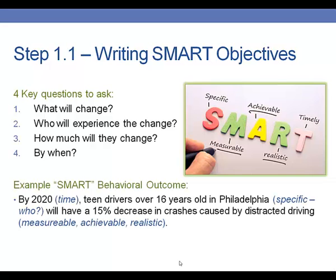Here's an example. By 2020 — a very specific time — teen drivers over 16 years old in Philadelphia, now we've got our specific target audience, will have a 15% decrease in crashes caused by distracted driving. This is measurable — a 15% decrease. It's achievable; we're not looking to decrease by 85% by 2020, but 15% is a much more realistic and achievable goal. And it's realistic because it allows enough time to get this done.